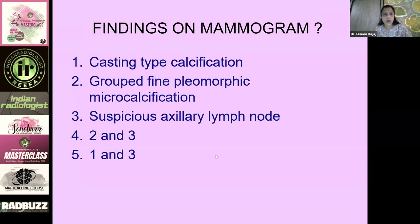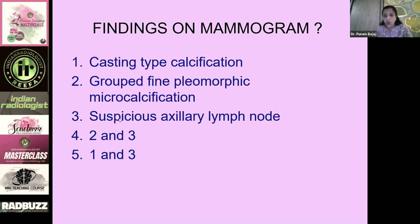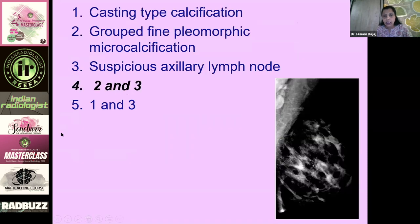Most of you answered B or D. The correct answer is grouped fine pleomorphic microcalcification along with the suspicious axillary lymph node — that is option 2 and 3 combined. You can see the suspicious axillary lymph node. So this is the correct answer.